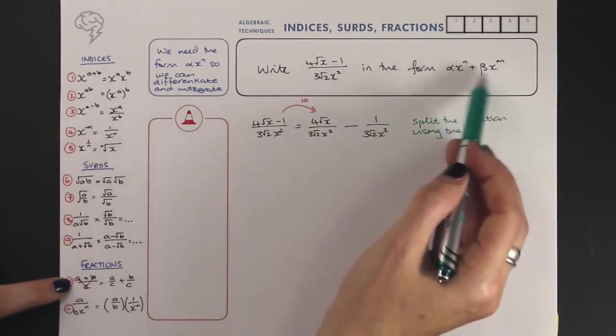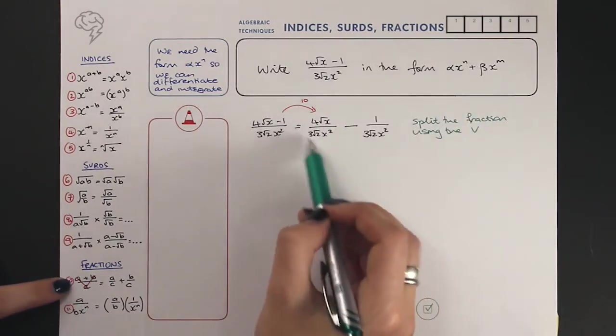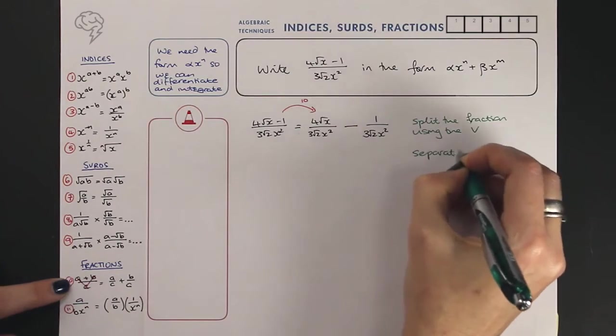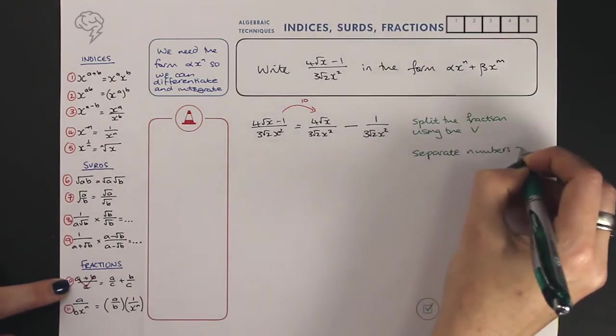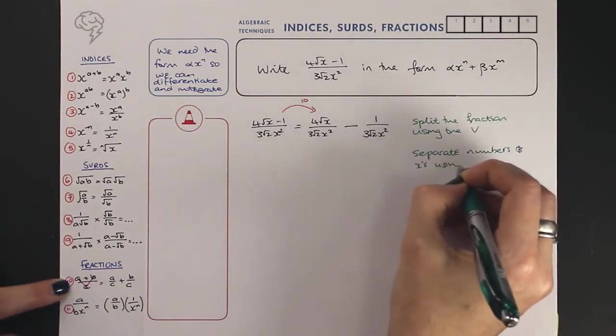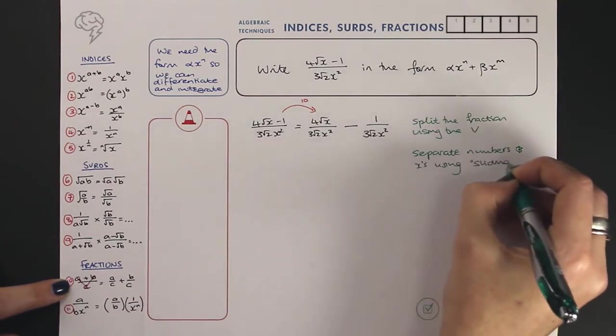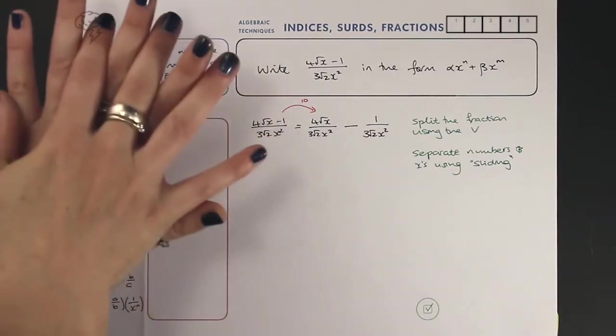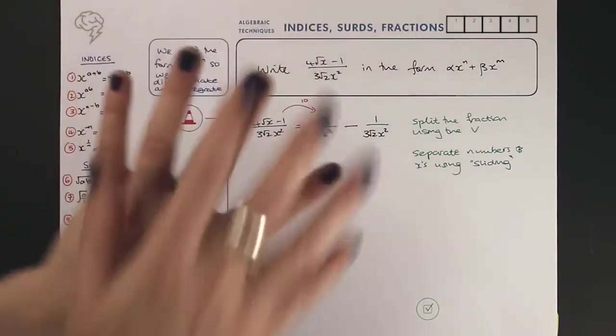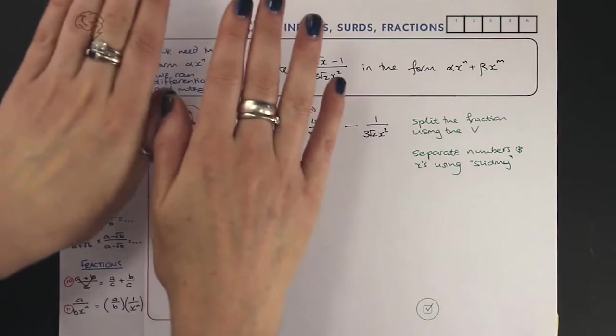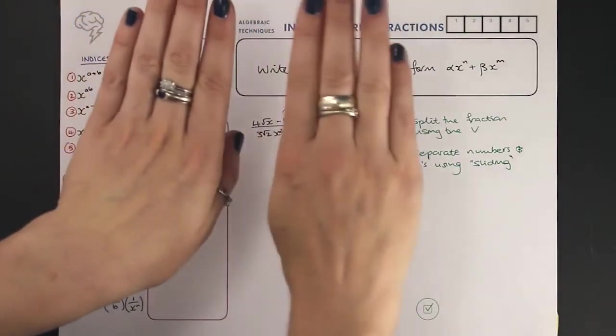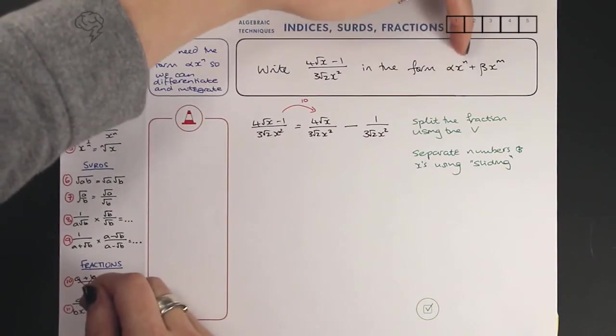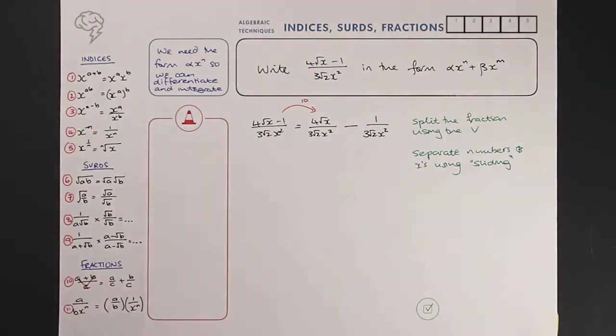For that we're going to use sliding, which is this thing down here, where you take this mesh of numbers and x's and powers, and you slide the numbers over to the left and you slide the x's over to the right so they sit separately and you have a number and an x and a power. So this is what it looks like.